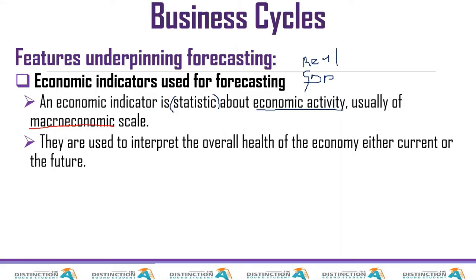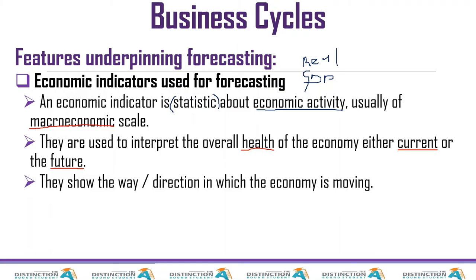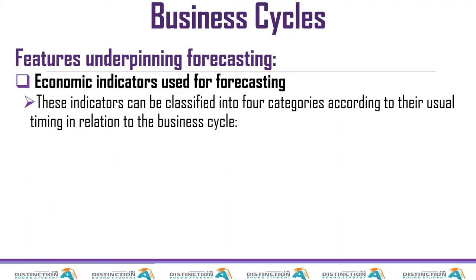Economic indicators are used to interpret the overall health of the economy — whether current, future, or even past. They show the direction in which the economy is moving. These indicators are classified into four categories according to their timing in relation to the business cycle. We used to classify them into three according to the CAP syllabus, but one was added.